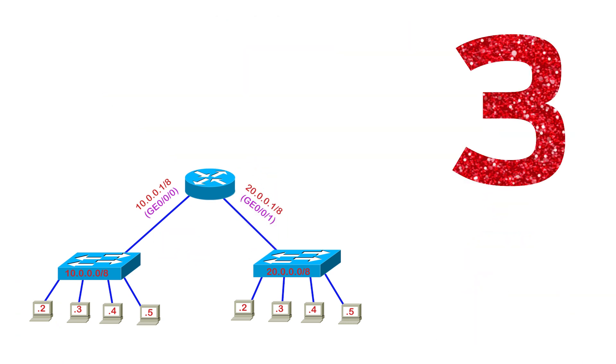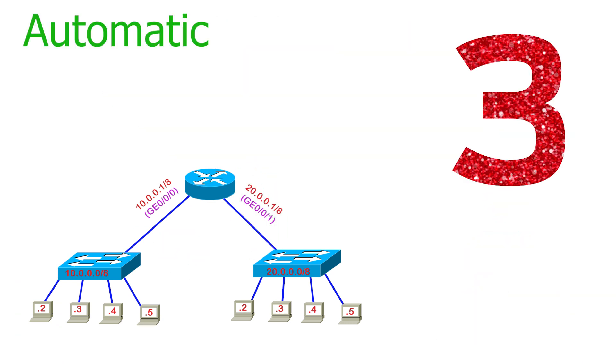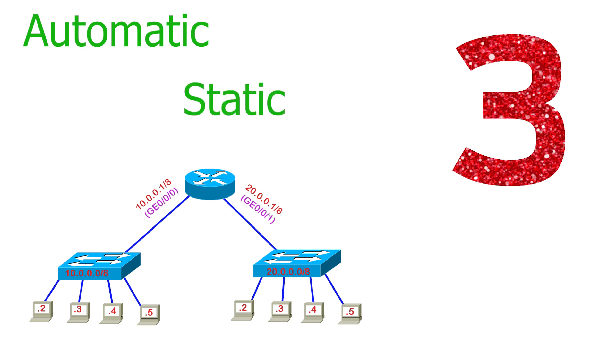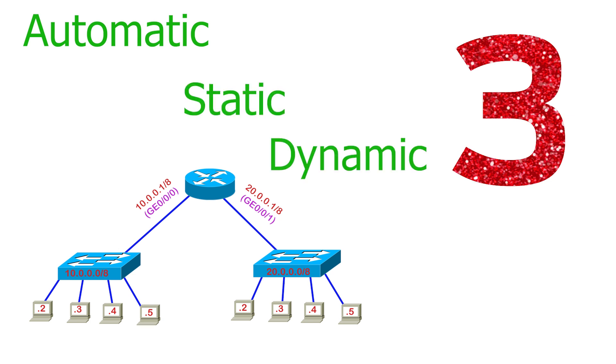There are three ways to add routing information to the routing table: automatic, static, and dynamic.